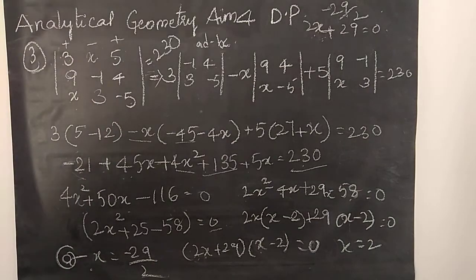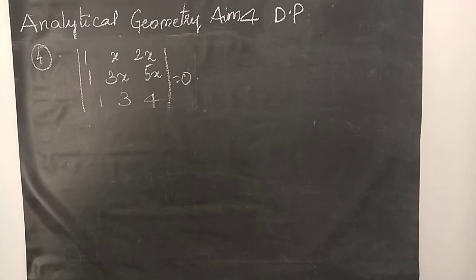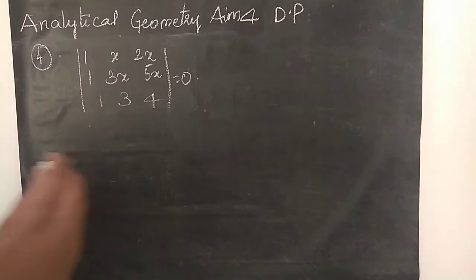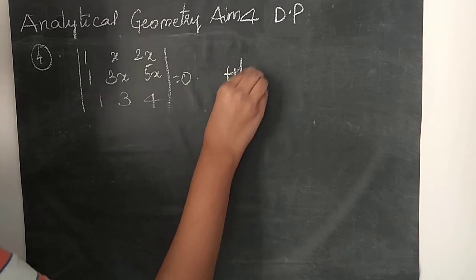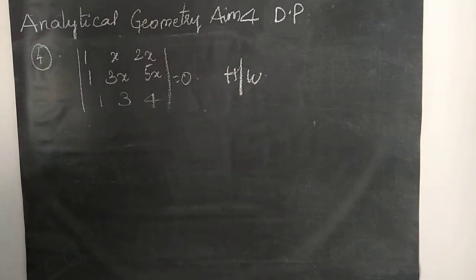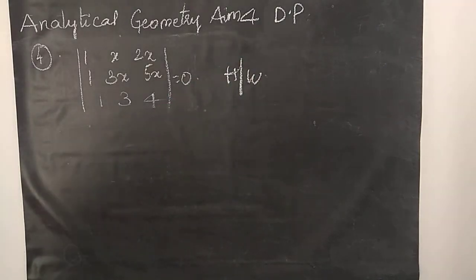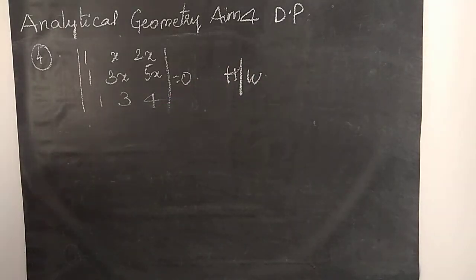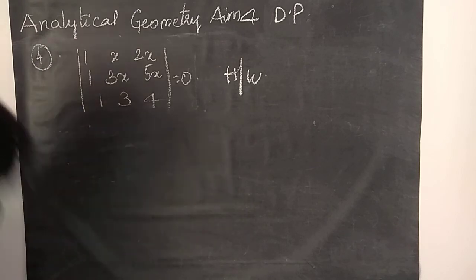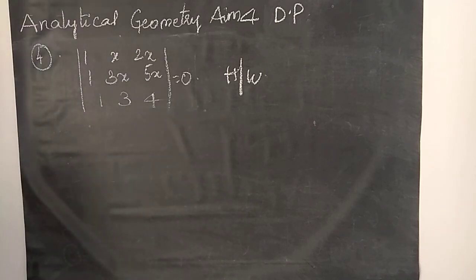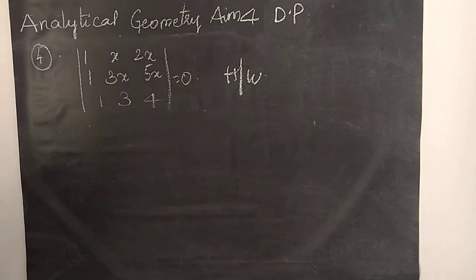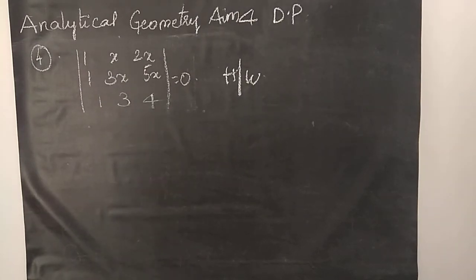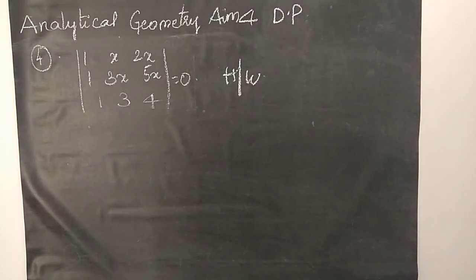Now we will see the fourth one. This is the fourth equation and it is homework because it is very simple. This is what is the aim for analytical geometry — with this we complete our aim. Do like, share and subscribe to Vishwa Blooms. Bye, thanks for watching.